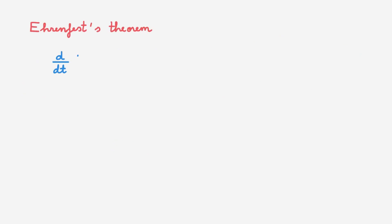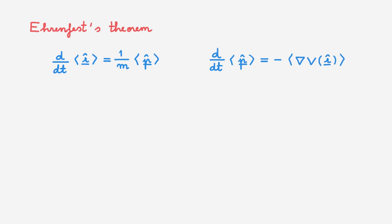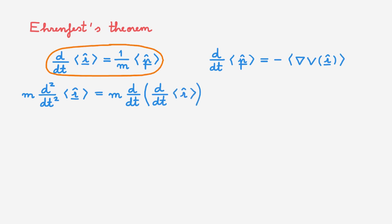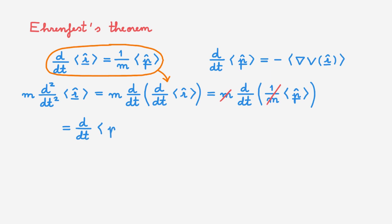Ehrenfest's theorem says that the time derivative of the expectation value of position is equal to 1 over m times the expectation value of momentum, and that the time derivative of the expectation value of momentum is equal to minus the expectation value of the gradient of the potential. We can combine these two equations into a single expression: m times the second time derivative of the expectation value of position. Separating the time derivative and using the first Ehrenfest equation, we can cancel the mass terms and find that the whole expression equals minus the expectation value of the gradient of the potential.